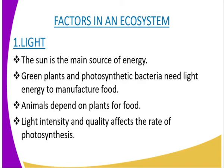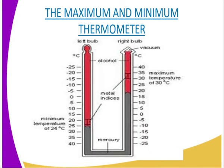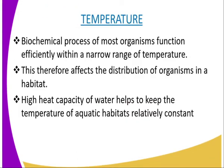We can have another factor in an ecosystem which is temperature. As shown by the maximum and minimum thermometer diagram here, the biochemical processes of most organisms function efficiently within a narrow range of temperature. Temperatures vary due to the season, altitude, latitude, and diurnal changes, especially in hot deserts. Living organisms must develop necessary physiological and behavioral adaptations to cope with the extremes of temperature.